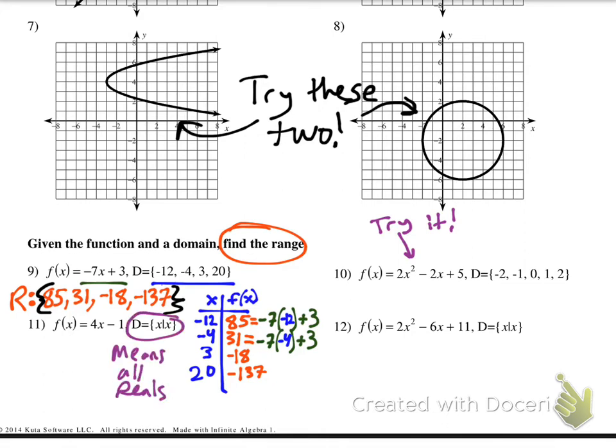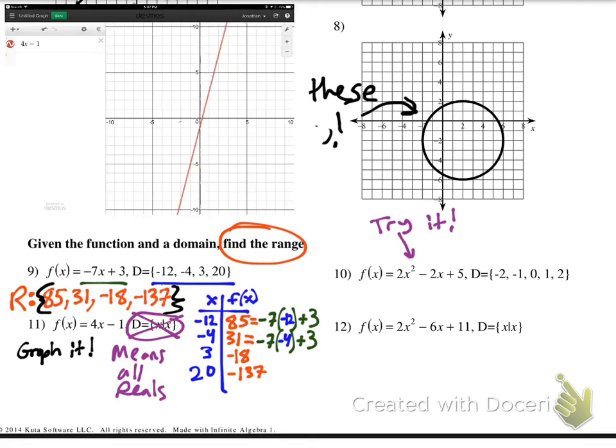All right, now that you've got that, I want to show you number 11 and 12. This right here just means all reals. Don't be confused by that. I will not be using that notation, so you can cross that out if you want. It just means all reals. What do you mean all reals? Well, that means all we need to do is graph it. We're gonna graph that equation right there, and you can use graphing calculator or you can use Desmos. I'm gonna use Desmos real quick.